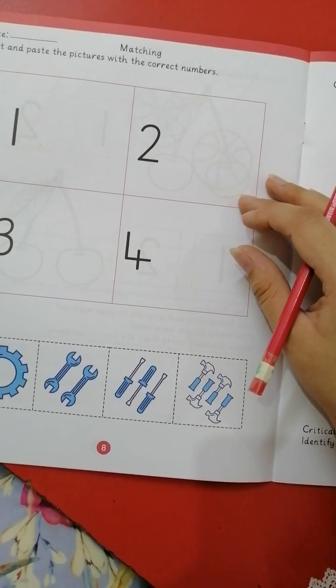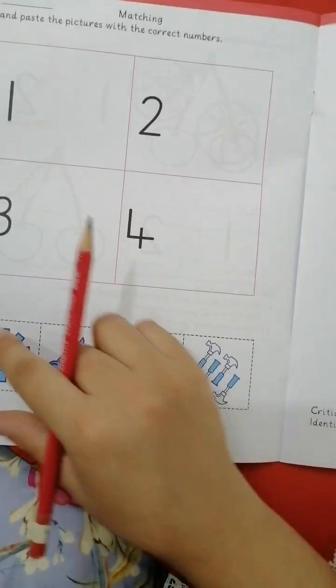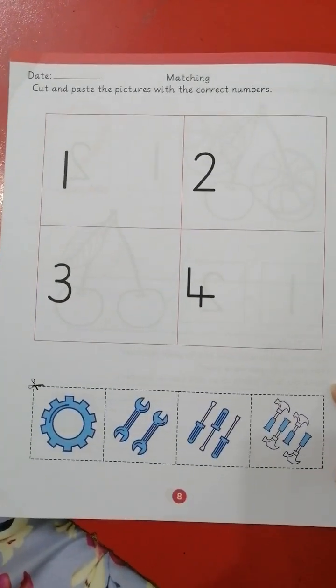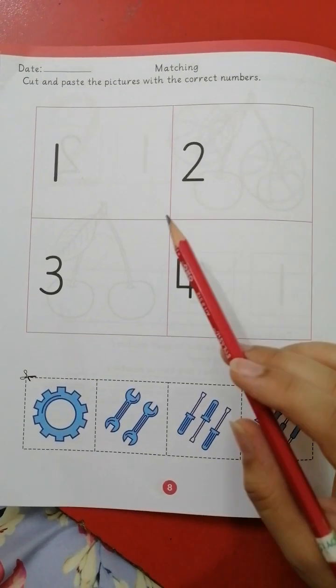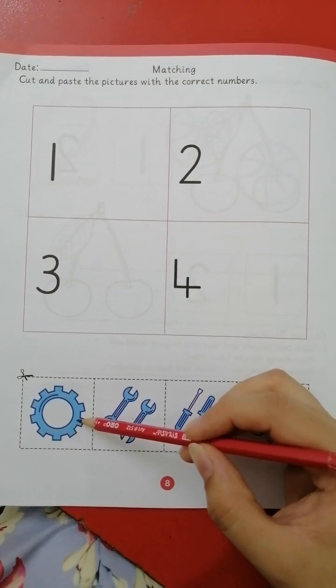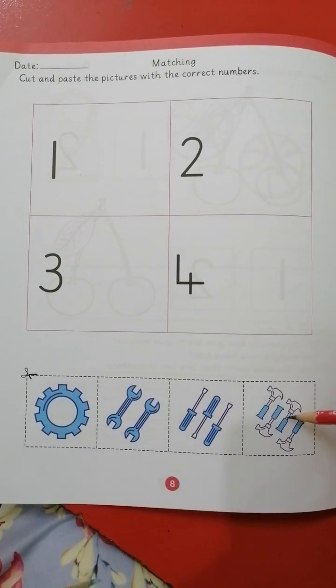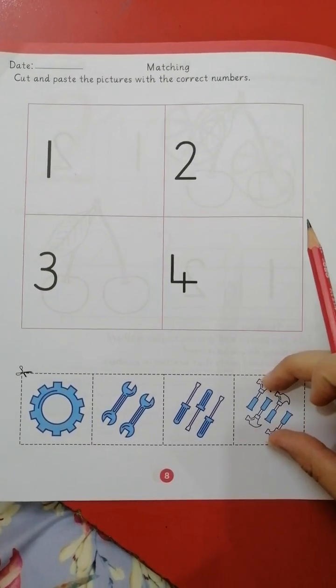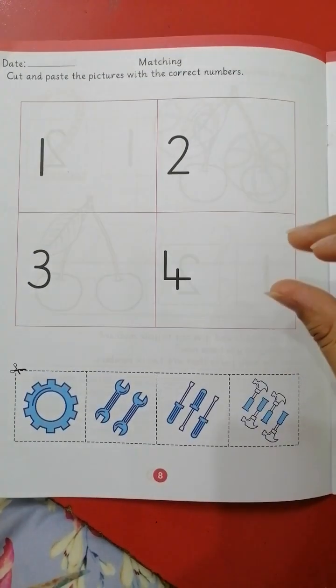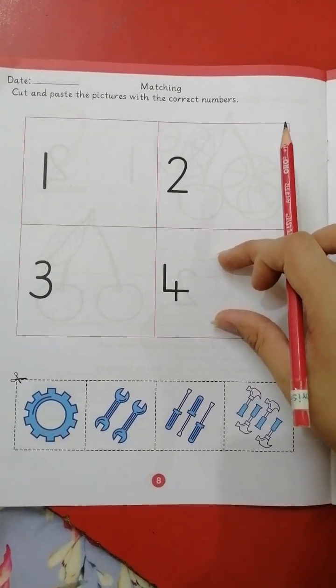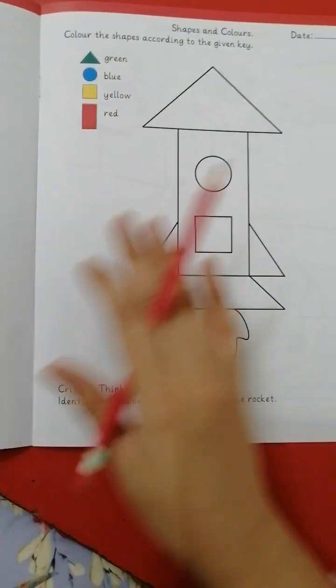Matching. Cut and paste pictures with the correct number. You have to cut this portion and according to the number like we have one over here, two, three, four. You have to cut it and find the number and paste it over here. If we have four here, then paste four over here.